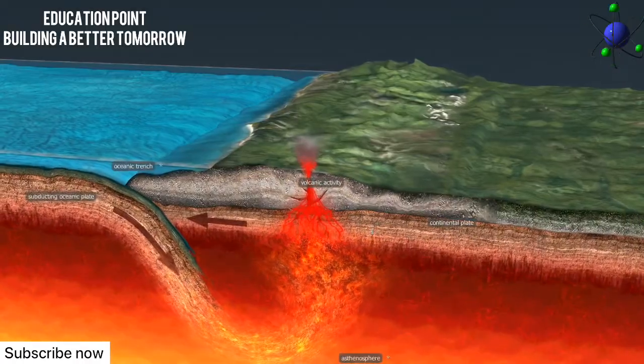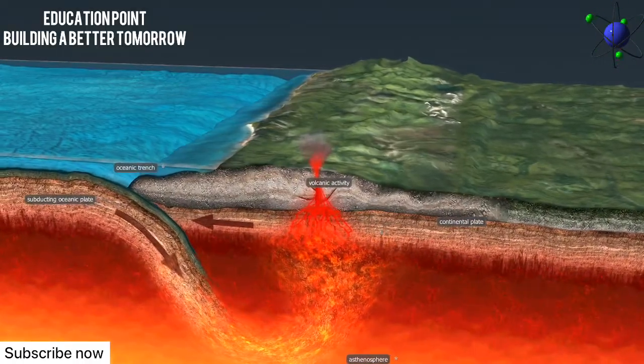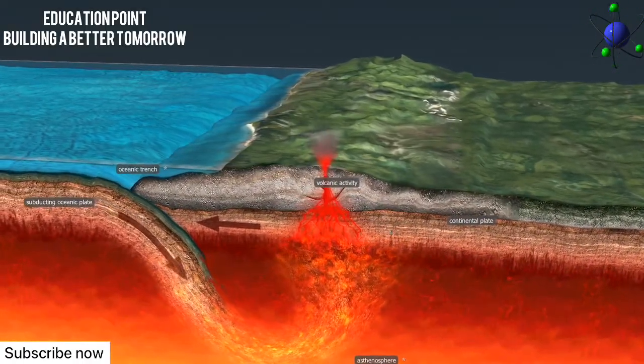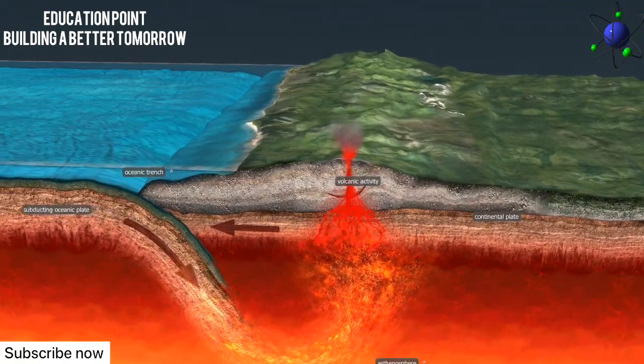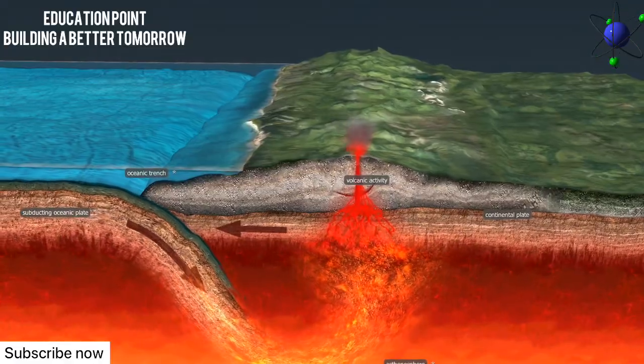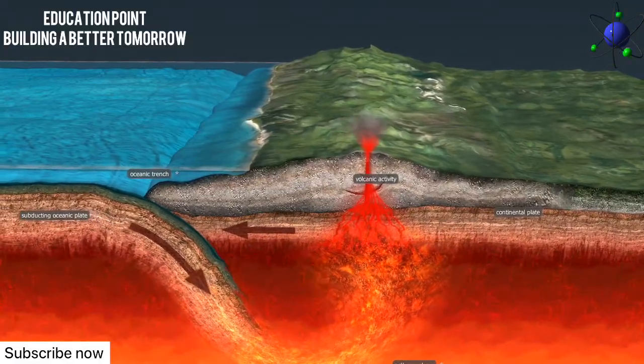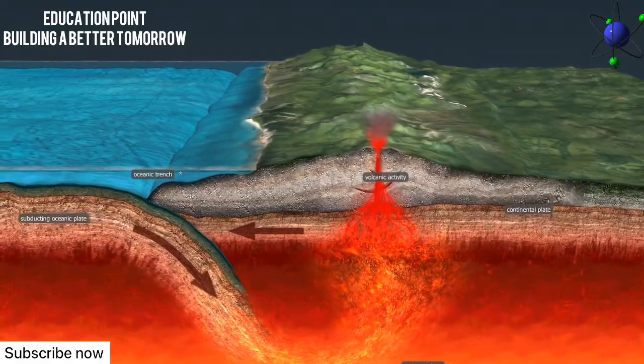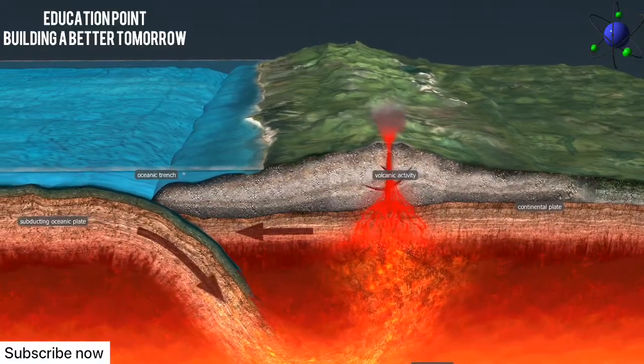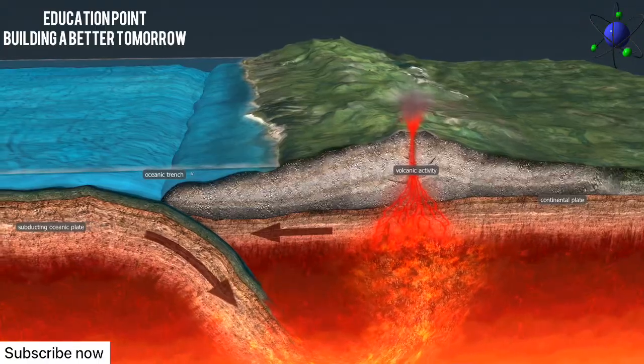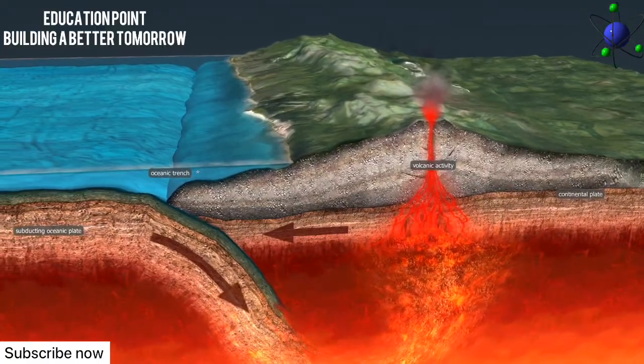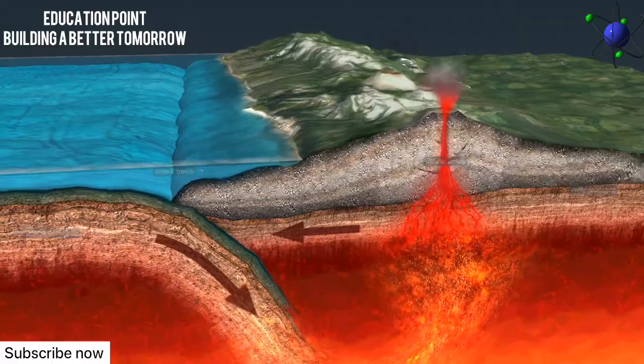However, since the surface of the Earth cannot increase continuously, the surface of oceans cannot increase continuously either. The opposite boundary of the oceanic plates approaches another plate. When the two tectonic plates collide, one plate moves beneath another. This is called subduction.